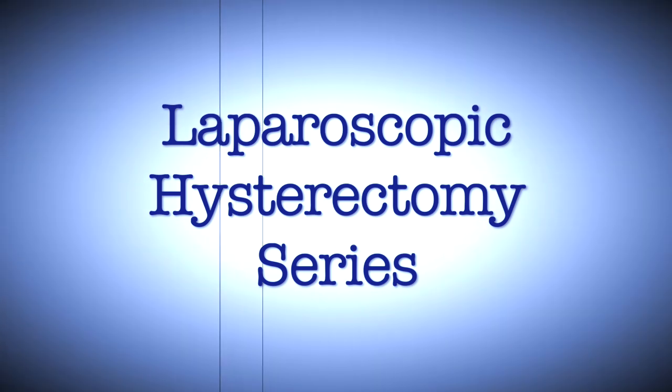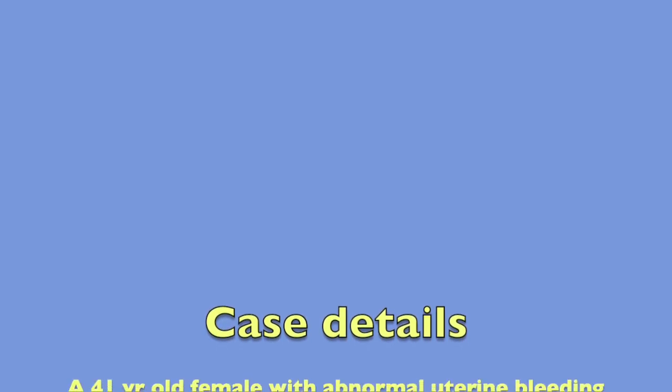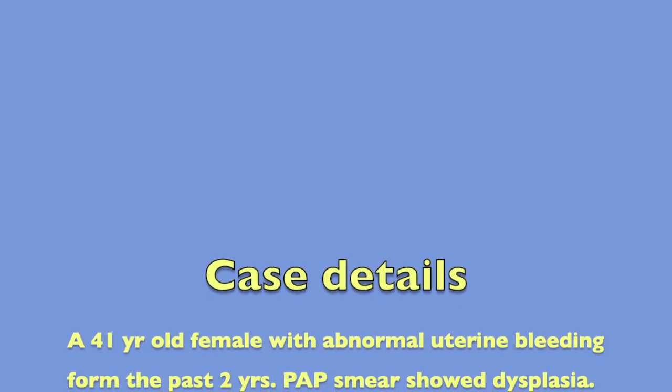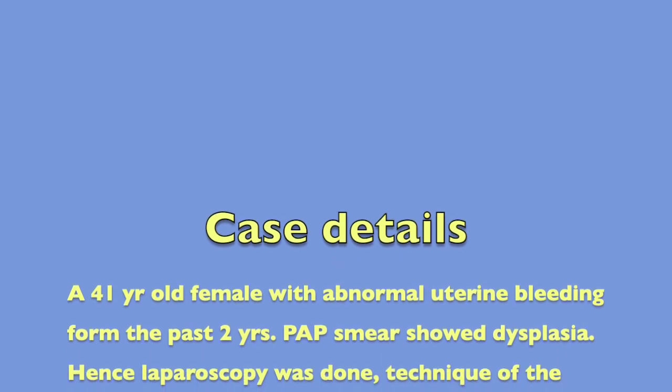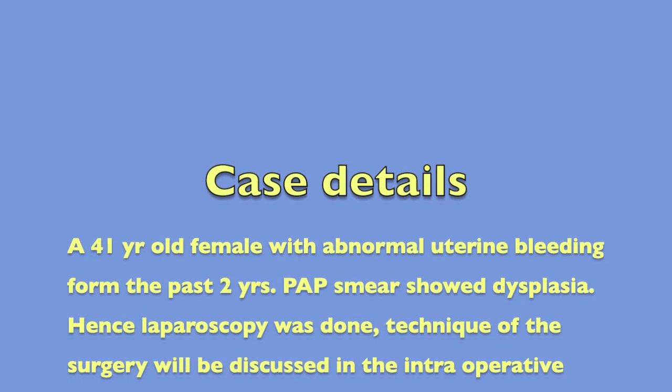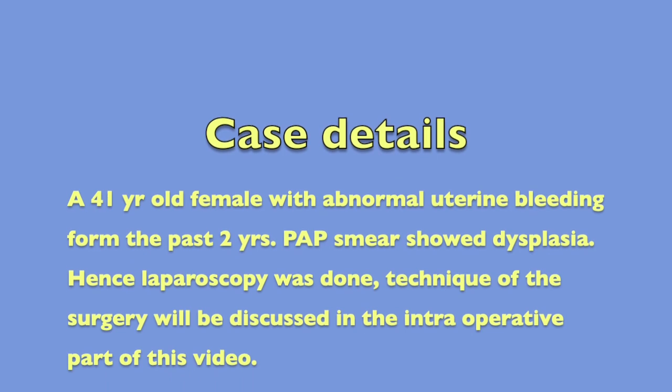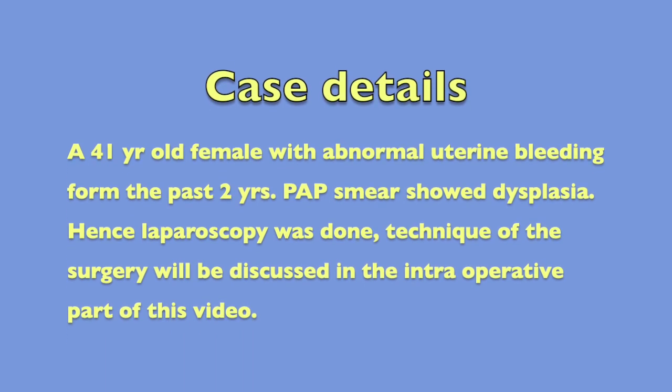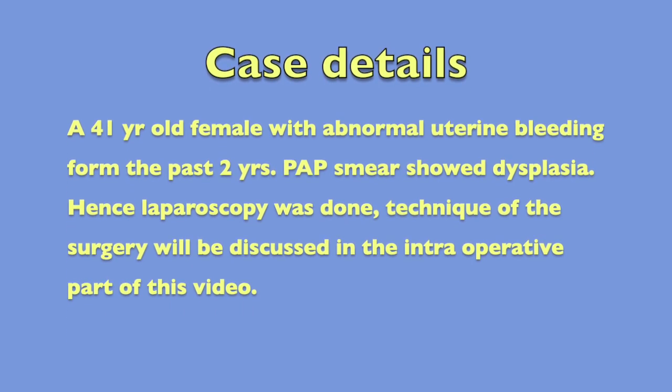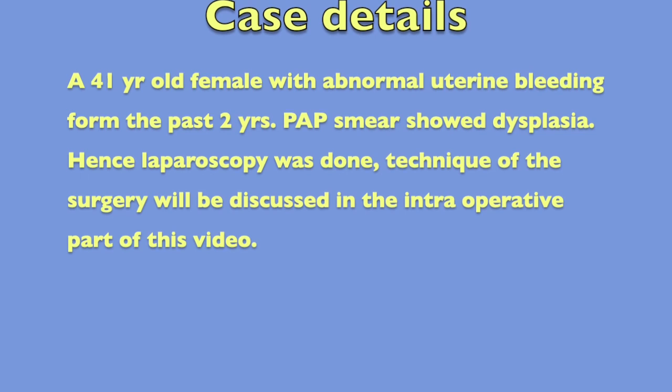This is the laparoscopic hysterectomy series and we are going to discuss the second case in this series. The patient is a 41-year-old female with heavy irregular menstrual bleeding from the past 2 years. Pap smear showed dysplastic cells, hence laparoscopic hysterectomy was planned.